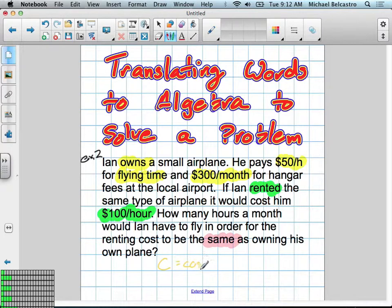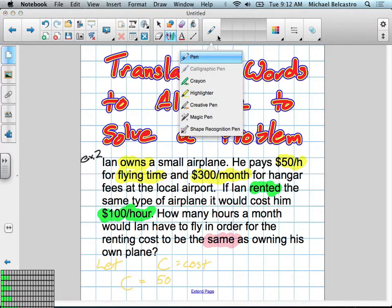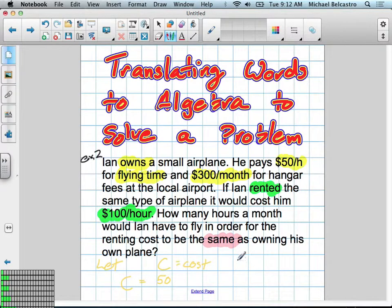C is equal to his cost. And usually we call this a let statement. So let C equal his cost. So we know that Ian's cost for owning a plane is equal to $50 an hour. So we have 50, and we'll call hours, I guess we can call them H in this case. We'll say, and let H equal our hours.